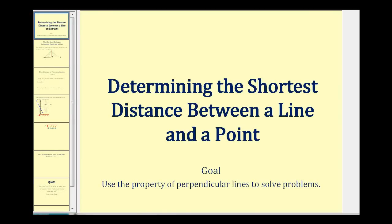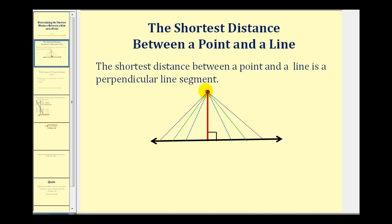Welcome to a video on determining the shortest distance between a line and a point. If we're trying to determine the shortest distance from this red point to this black line, we can see visually it's going to be a segment that's perpendicular to the black line. If the segment is not perpendicular, it would not be the shortest distance. So the shortest distance between a point and a line is a perpendicular line segment. A lot of times when solving a problem like this, they won't even say shortest distance — it'll be assumed that if you're finding the distance between a point and a line, it is the shortest distance.